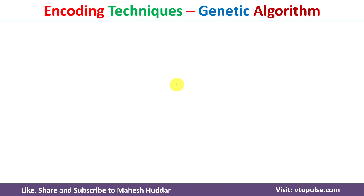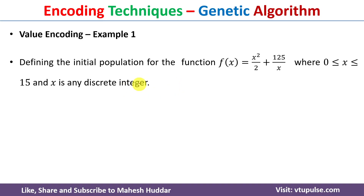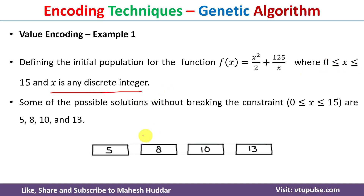Let us take an example to understand value encoding. Again considering the same function f(x) = x²/2 + 125/x, where x goes from 0 to 15 and x is a discrete integer. The potential solution values are in the range of 0 to 15, so the chromosome contains values directly. For example, the first chromosome contains the value 5, the second 8, the third 10, and the fourth 13.